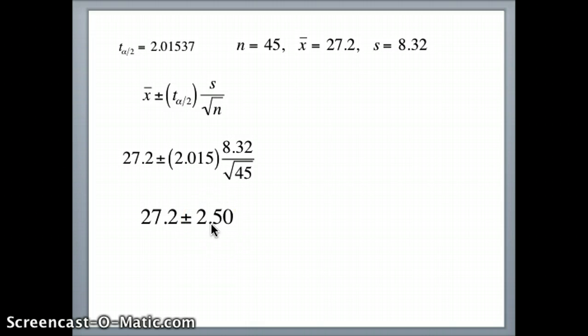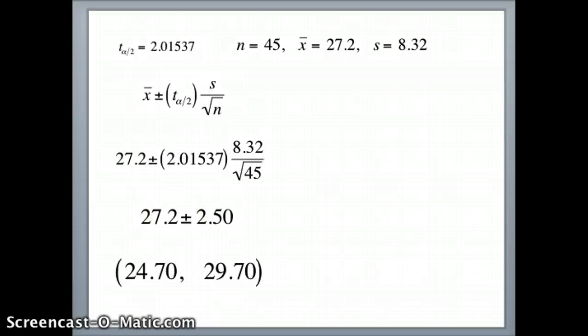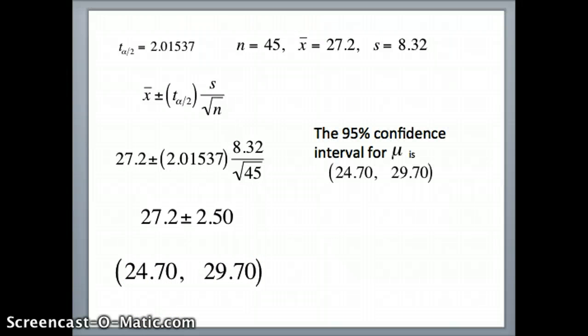That will be our 95% confidence interval. And it's important for us to know what that means. So we're saying 24.7 to 29.70 is essentially what we get. And our 95% confidence interval for the mean is 24.7 to 29.7.